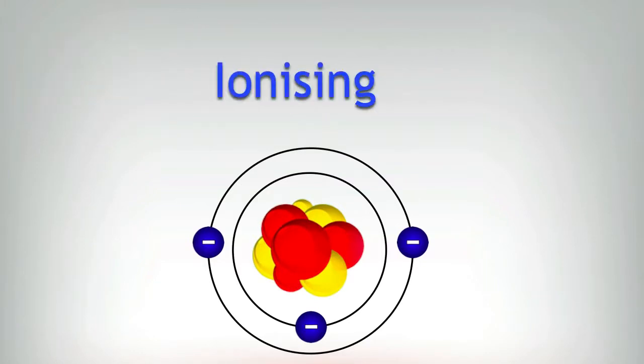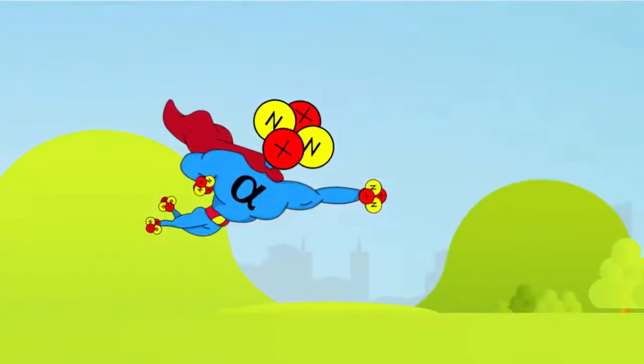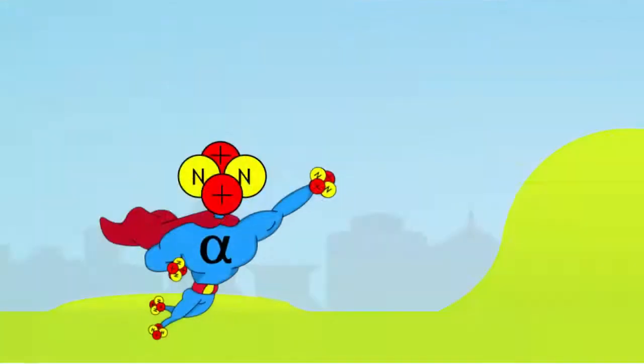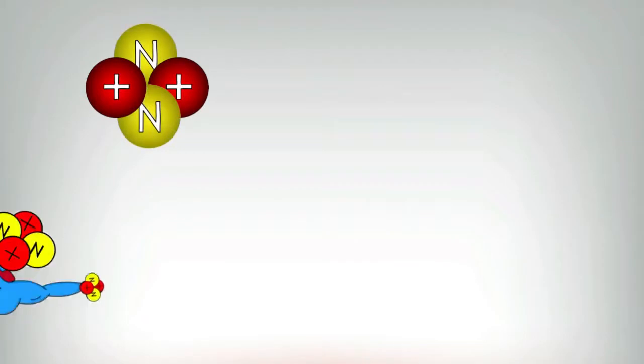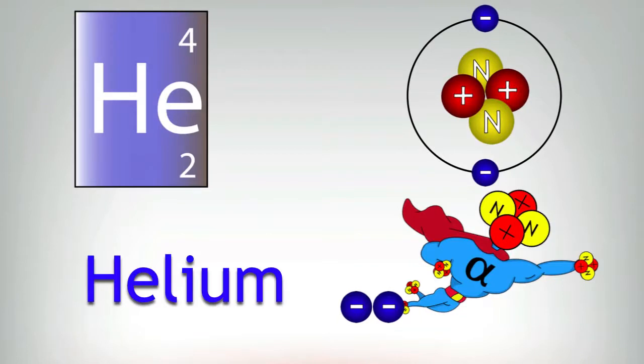However, it also loses energy more quickly than the other particles, so it slows down and eventually stops. This means it's not very penetrating. You can even stop it with tissue paper. Once you stop it, it sits and waits for a couple of electrons. So remember we said it's got two protons and two neutrons. When it gathers those electrons, it becomes a helium nucleus, which is pretty harmless.